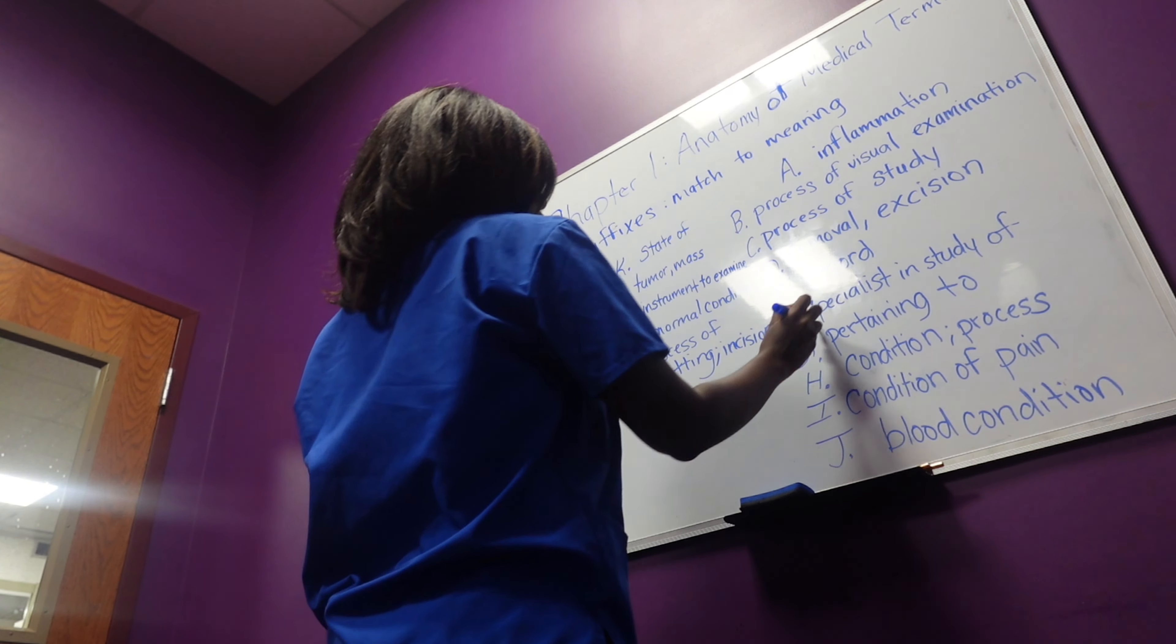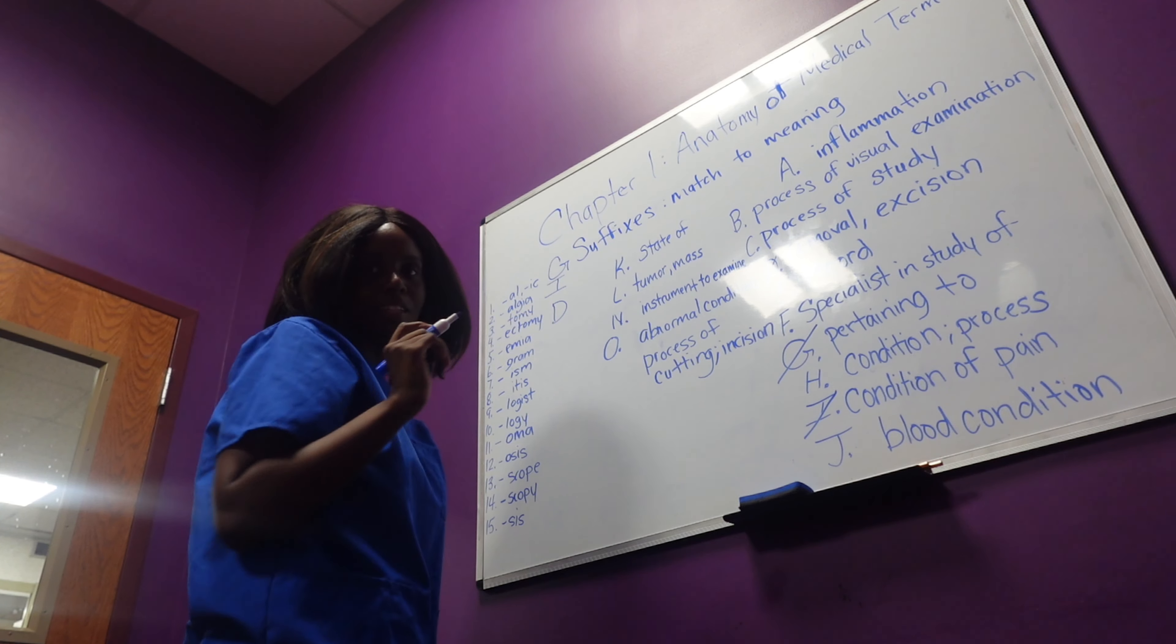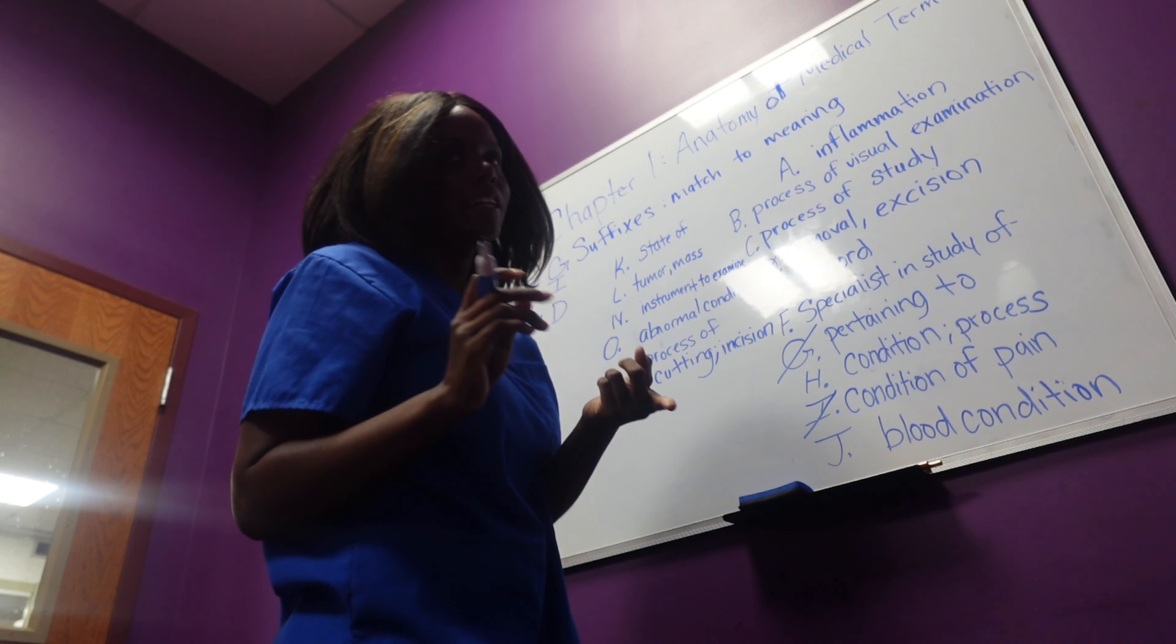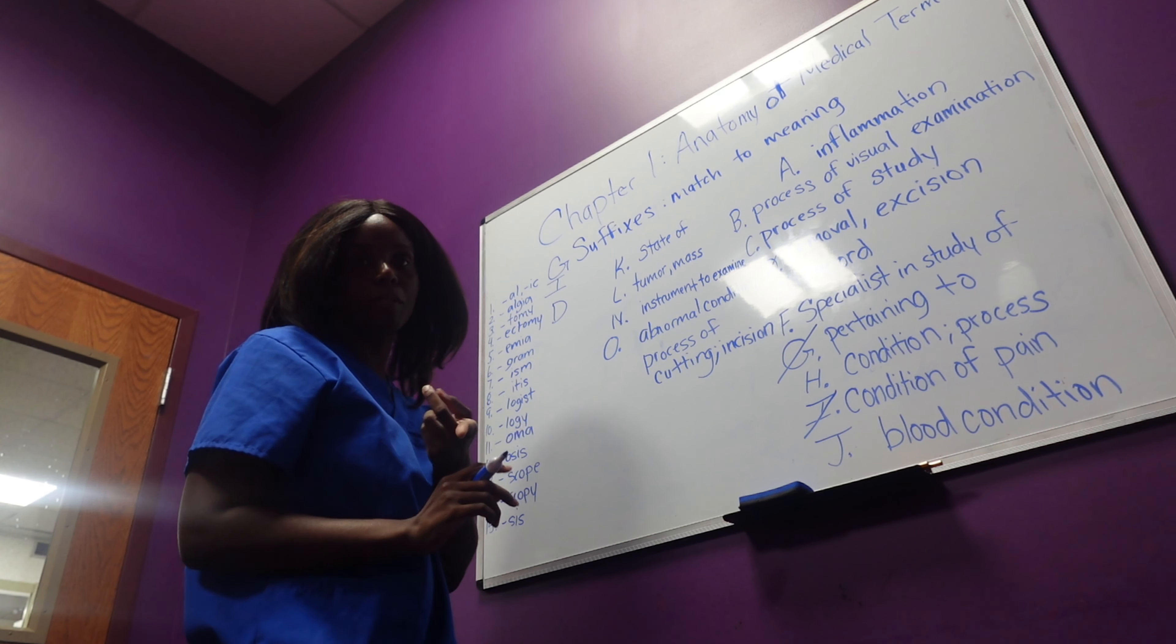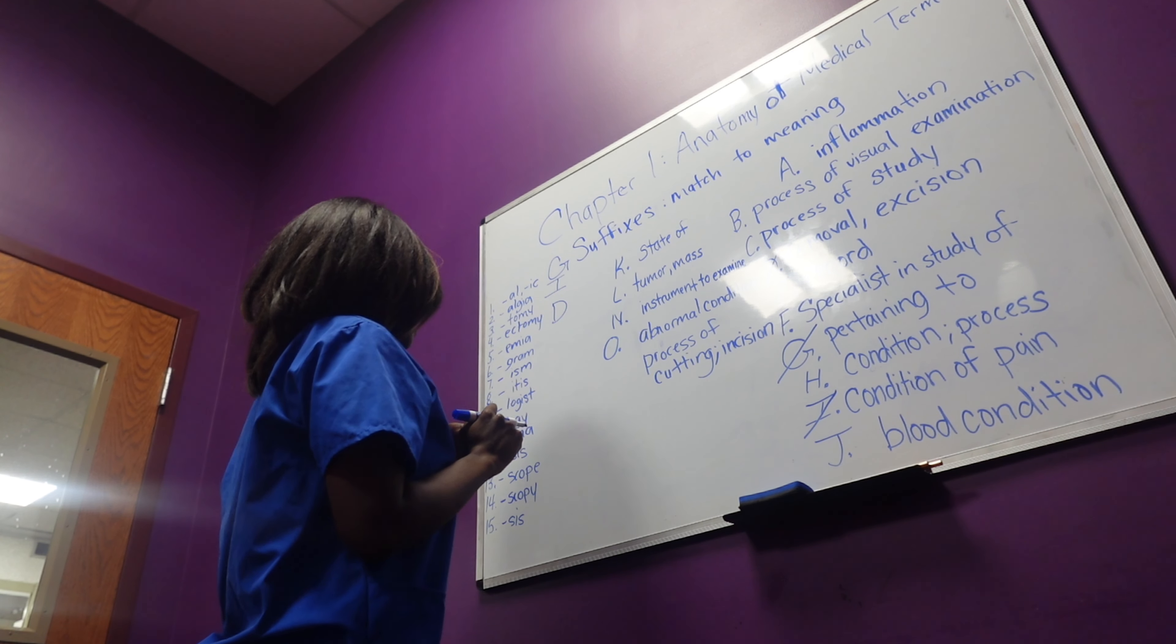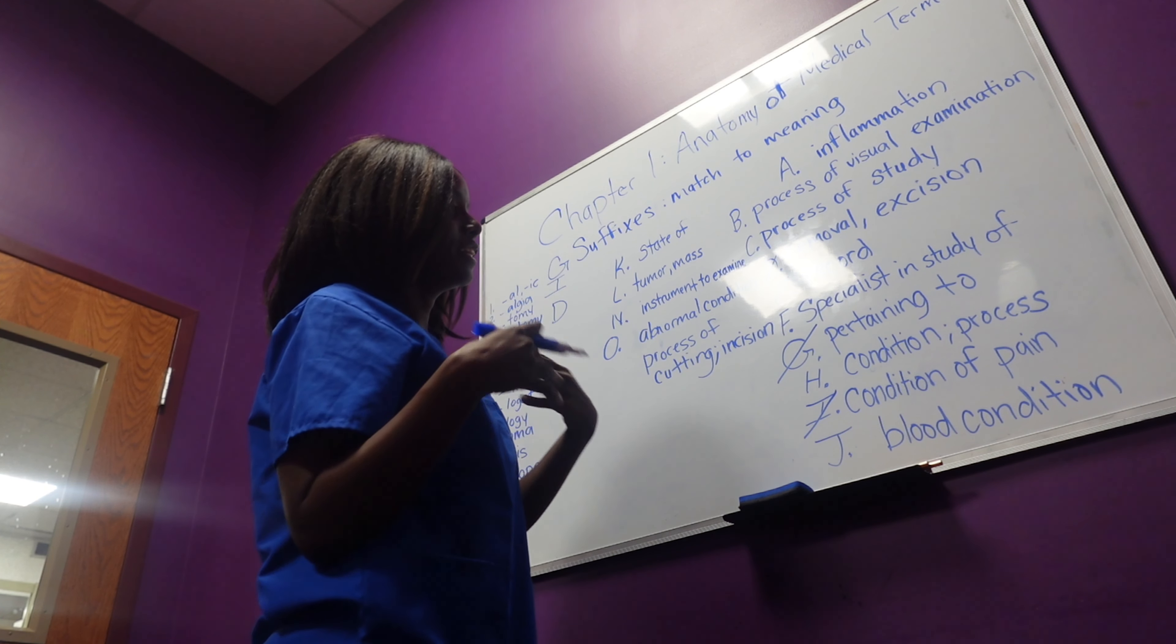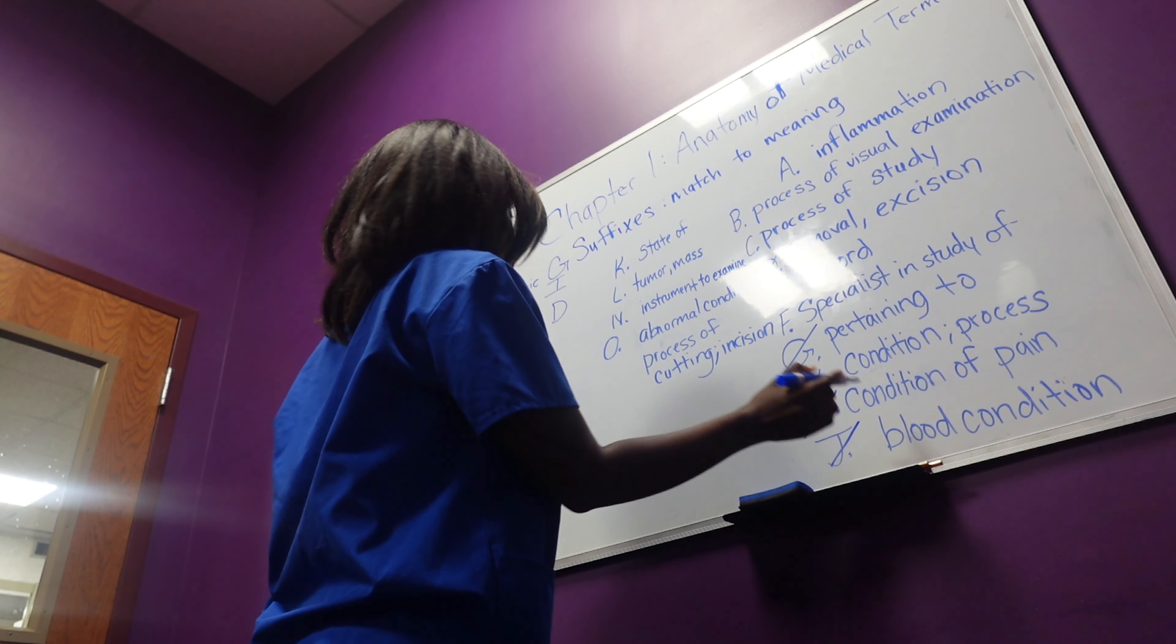So we have G, I, D. Emia, I think of anemia, ischemia. It has to do with the blood, something with the blood, so it's J, blood condition.